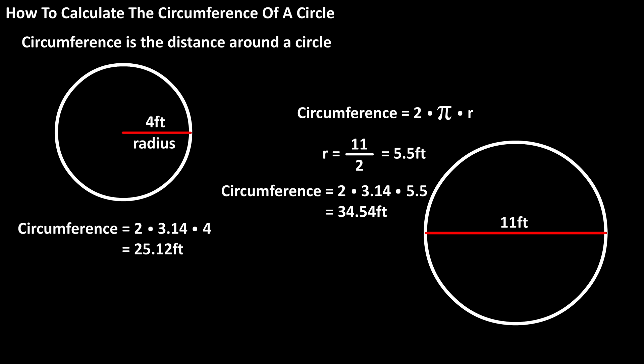And one note, another way to write the formula for circumference of a circle is pi times the diameter. So from the last problem, we would have 3.14 times 11, which equals approximately 34.54 feet. Same answer as before.